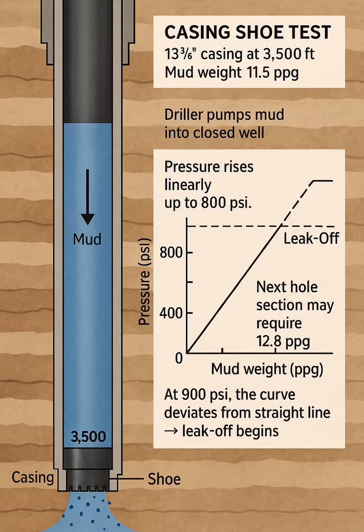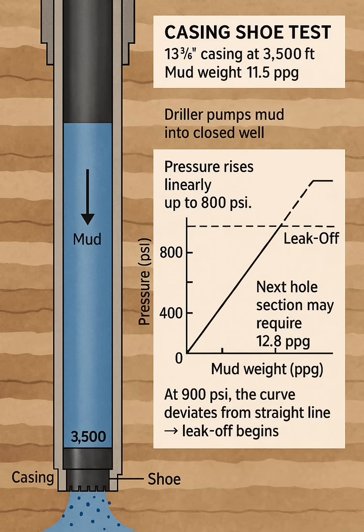After running and cementing the 13 and 3/8 inch casing at 3,500 feet, the drilling team prepares to test the casing shoe. Mud weight equals 11.5 ppg. The next hole section may require 12.8 ppg mud.